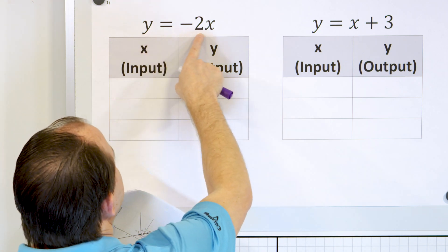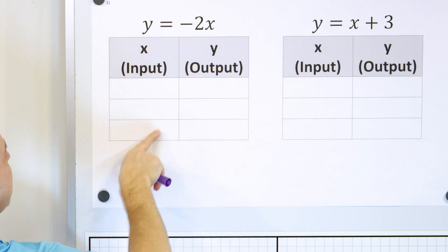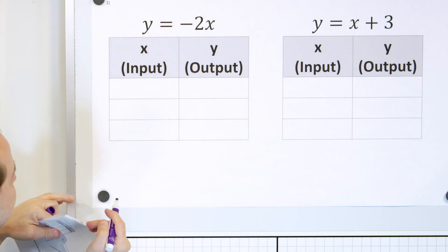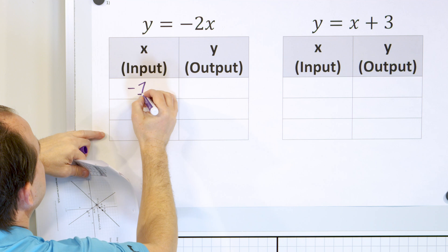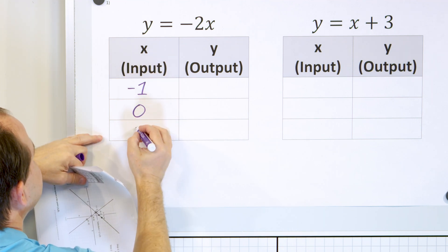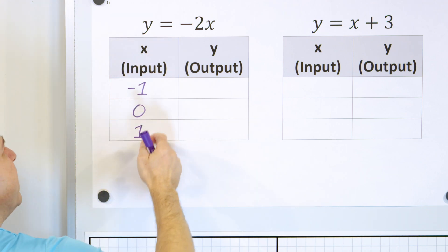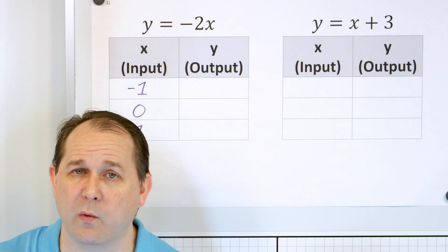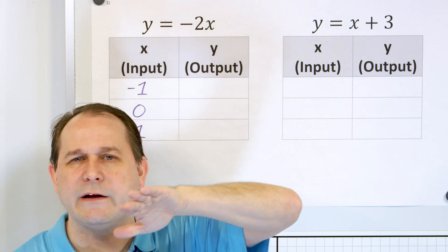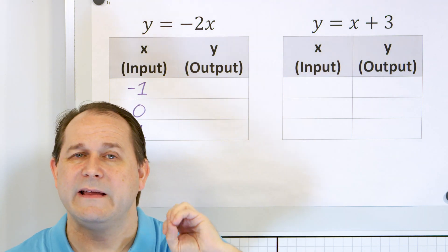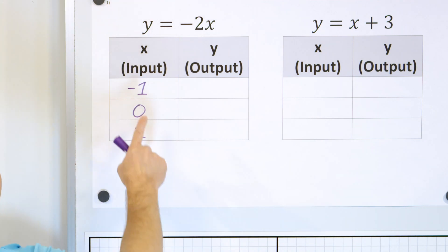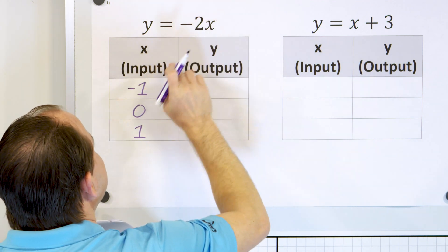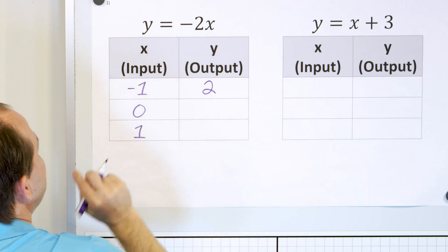Let's start with our first problem. We want to choose some input numbers for x and calculate the outputs. You can choose any numbers you want — even fractions or decimals. Here I'm going to choose negative 1, then 0, then 1 for x. I'm choosing three points — three points for each line. If I put negative 1 in, it's negative 2 times negative 1, which gives a positive 2.